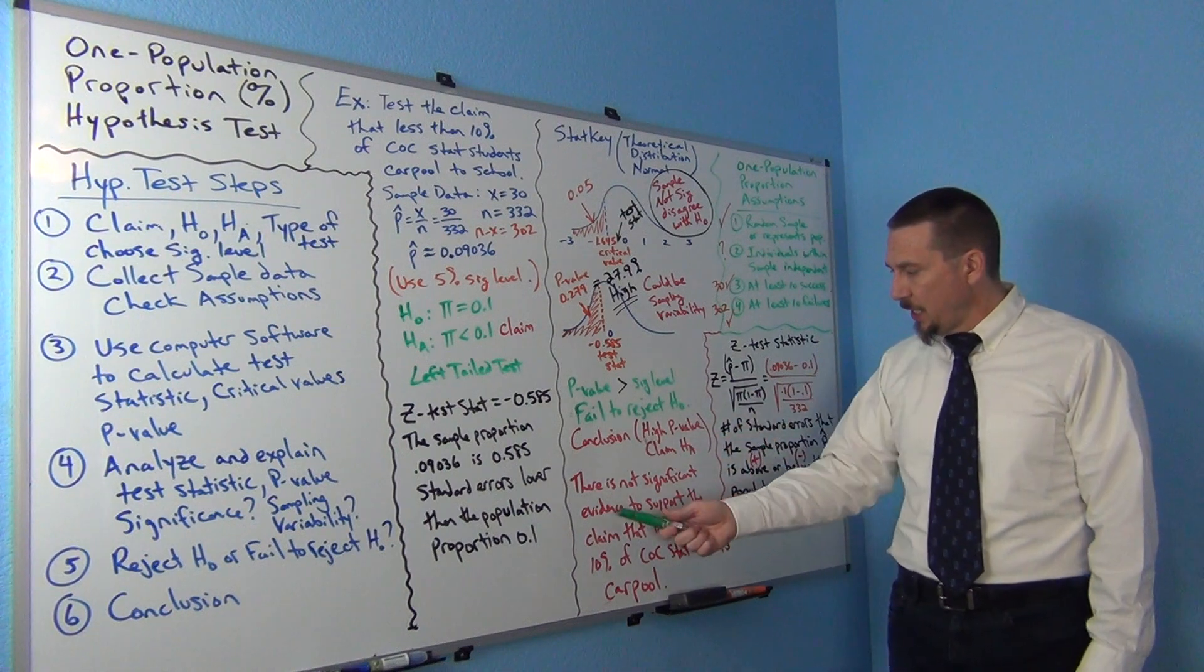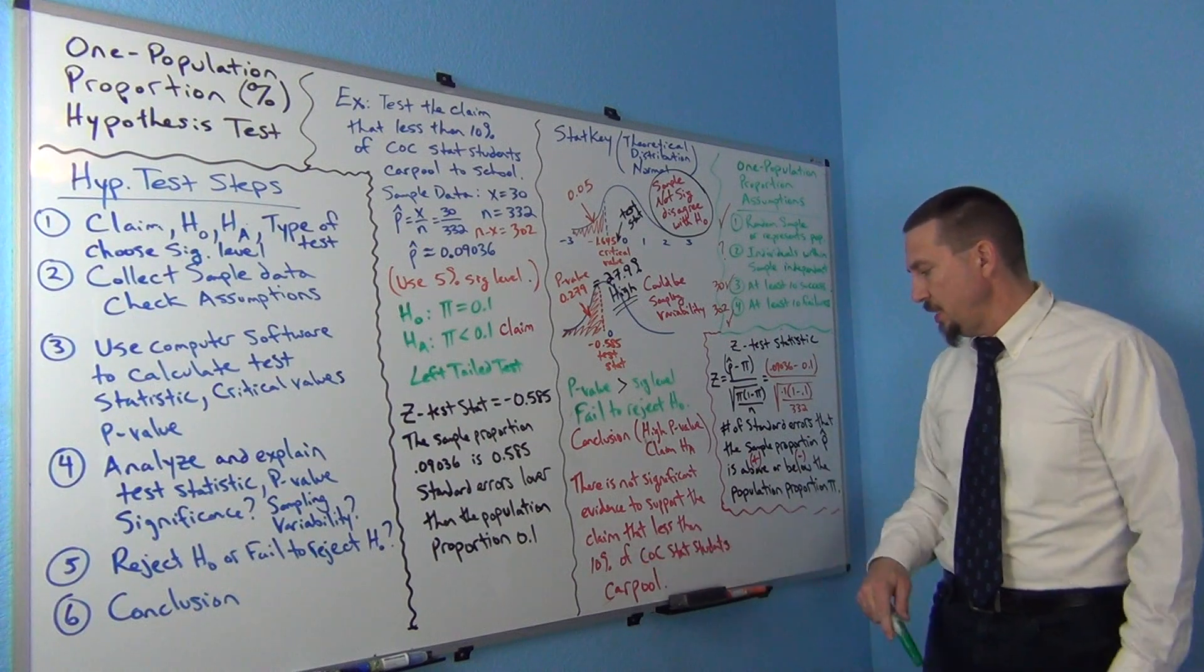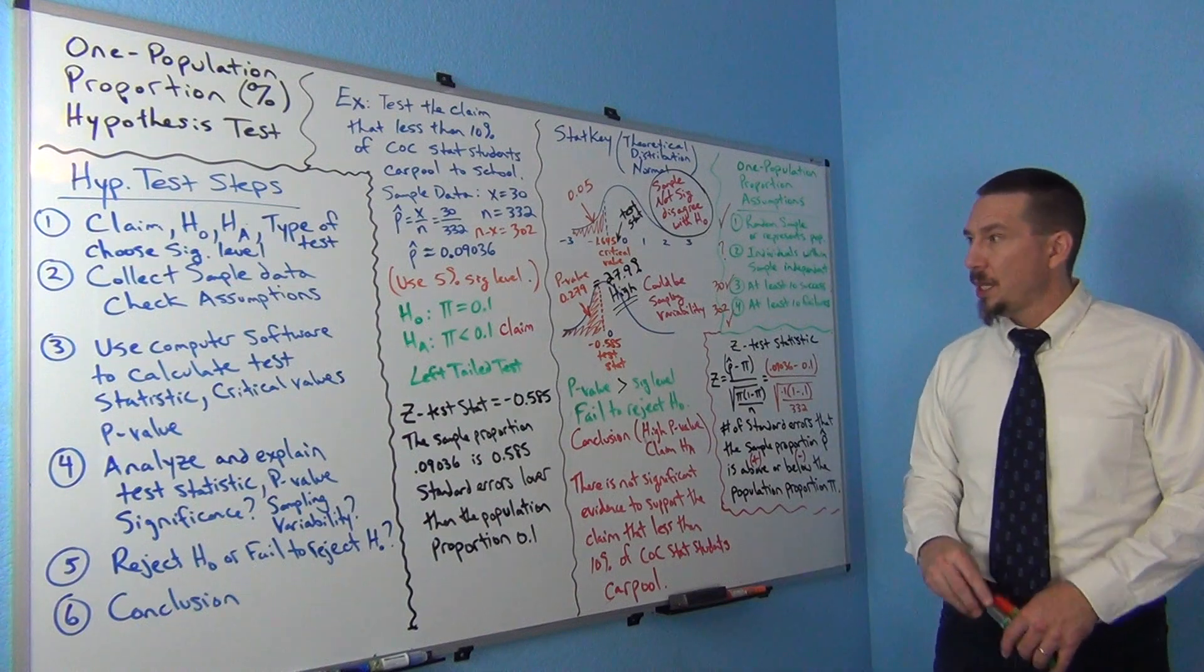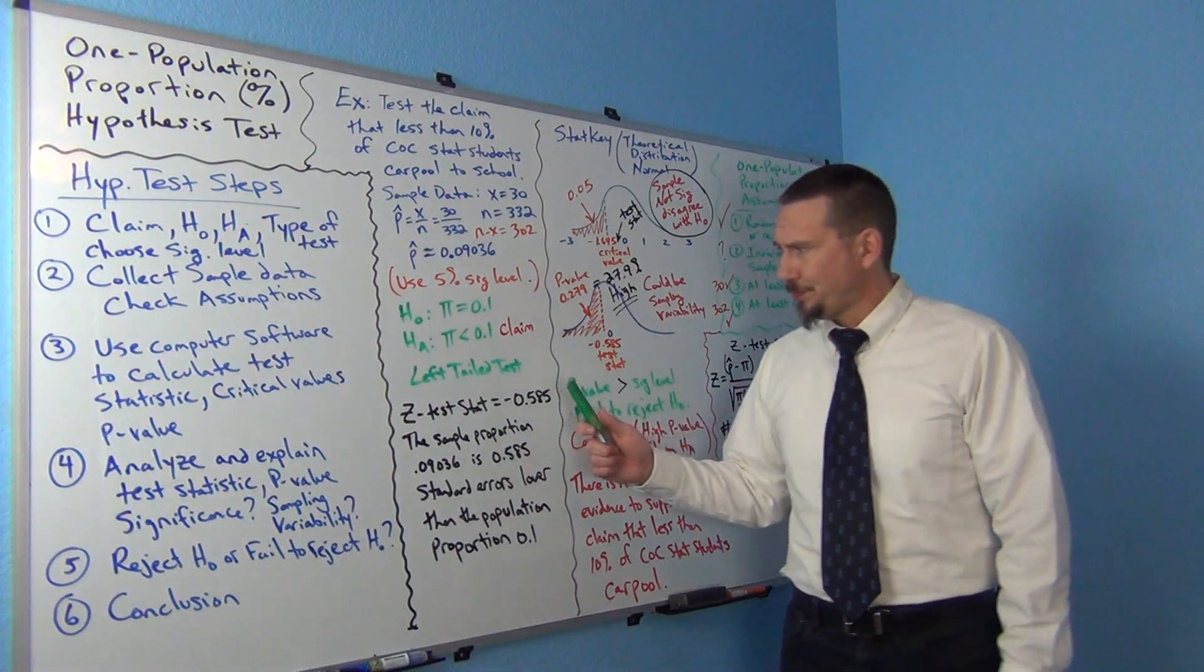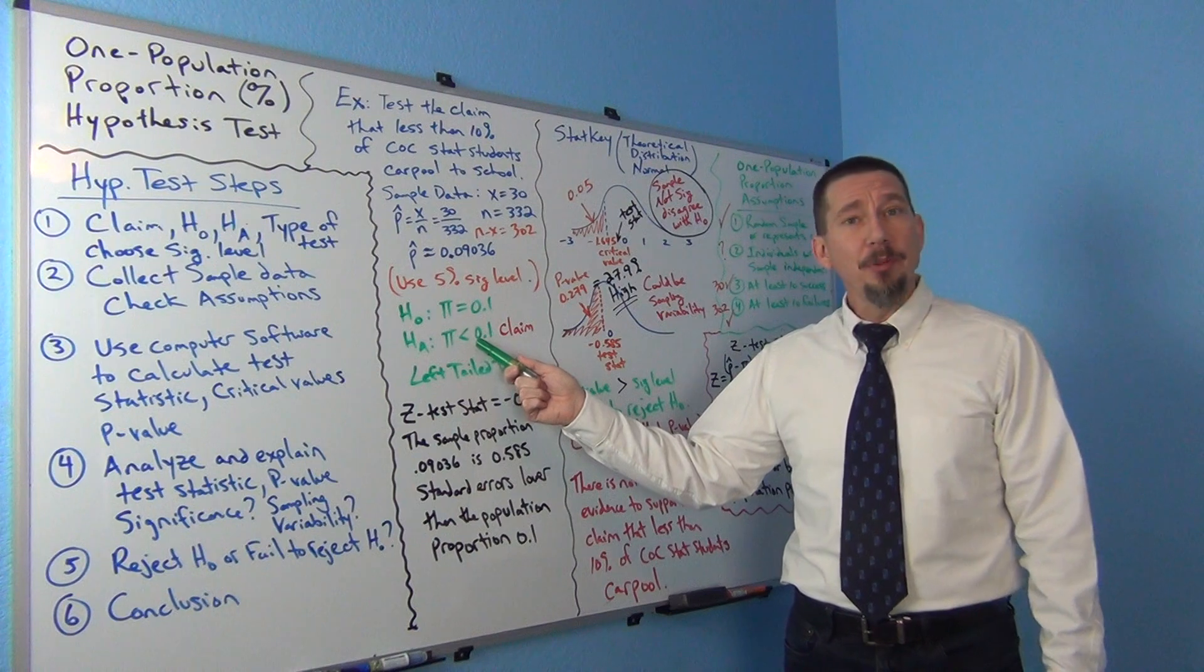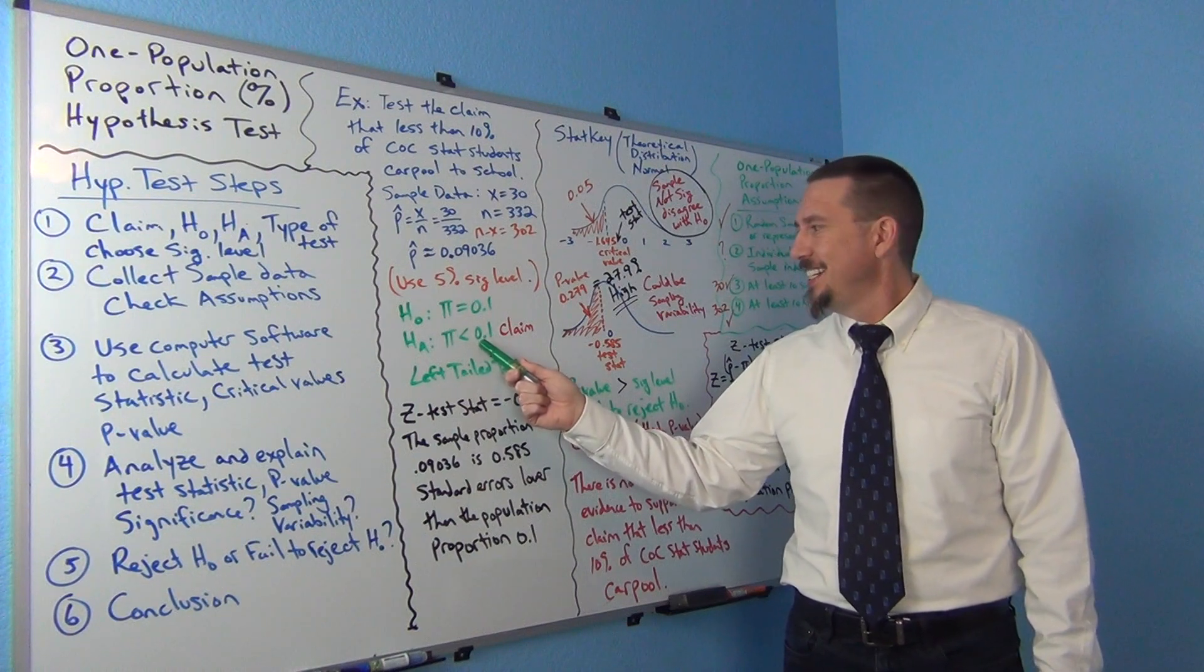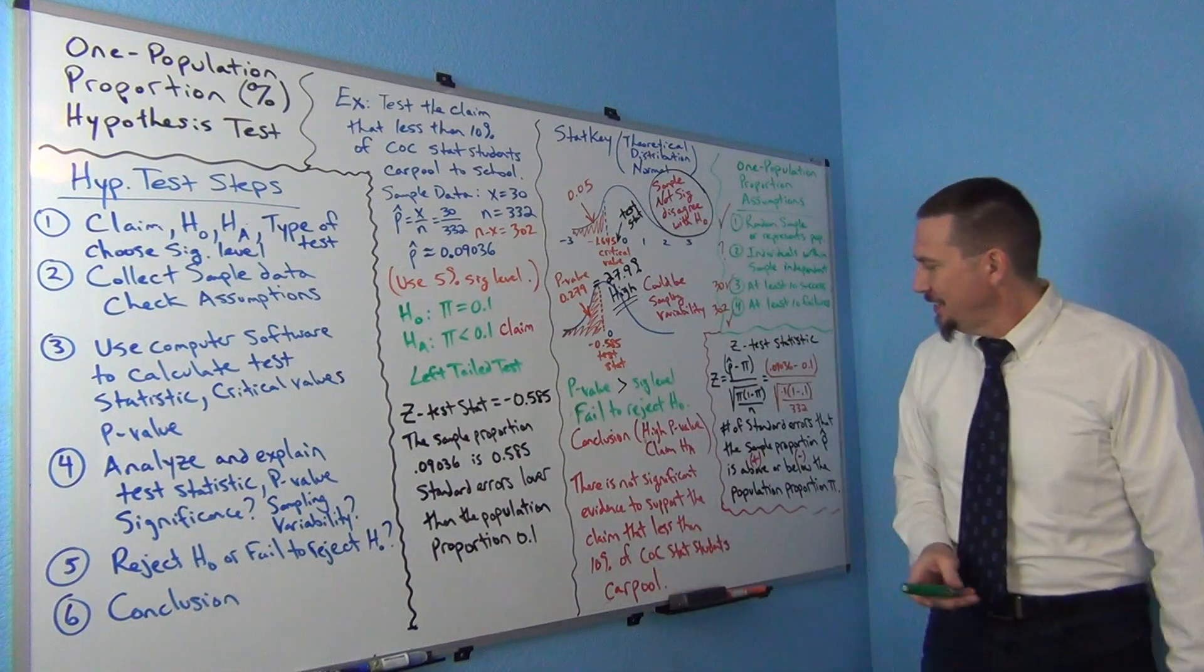So there is not significant evidence to support the claim that less than 10% of COC stat students carpool, right? So it's kind of like a not support. So maybe this is wrong, maybe HA is wrong, but I can't really prove it, right? I don't have evidence towards that. So kind of think of it as a not support situation, okay?